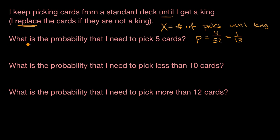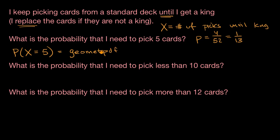So this first question is: what is the probability that I need to pick five cards? This would be the probability that our geometric random variable x is equal to five. You could actually figure this out by hand, but the whole point here is to think about how to use a calculator. There is a function called geometpdf, which stands for Geometric Probability Distribution Function, where you pass it the probability of success on any given trial — one out of 13 — and then the particular value of the random variable you want, so five right over there.